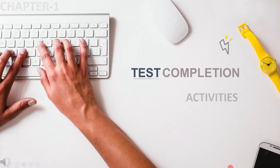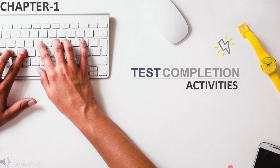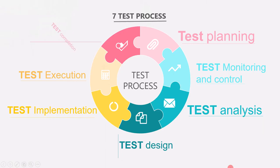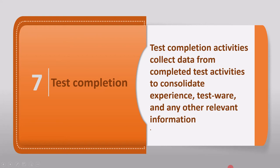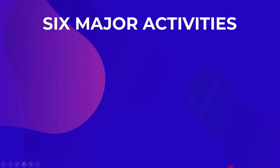In this lecture, we will cover test completion activities. Test completion is the seventh activity in the test process. In the previous lecture, we saw that test completion activities collect data from completed test activities to consolidate experience and any other relevant information. We will now cover the six major activities of test completion as mentioned in the ISTQB syllabus.